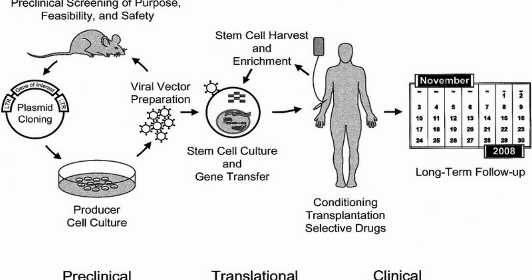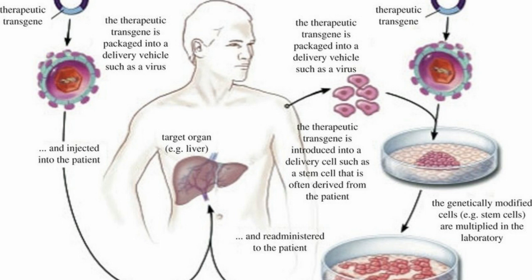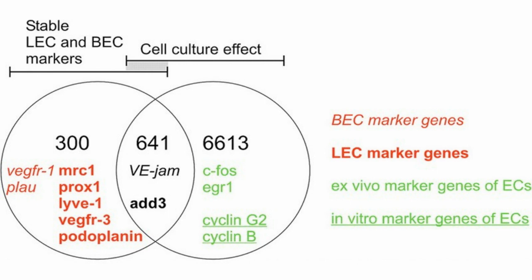Gene therapy can be categorized into two major types: ex vivo gene therapy and in vivo gene therapy. The key difference between them is that in ex vivo gene therapy, therapeutic genes are transferred to in vitro cell cultures and then reintroduced into a patient, while in in vivo gene therapy, genes are delivered directly to the patient's tissues or cells without culturing the cells in vitro.